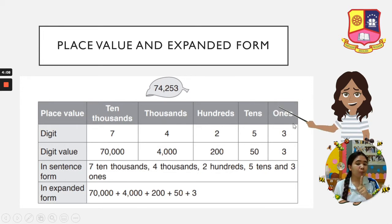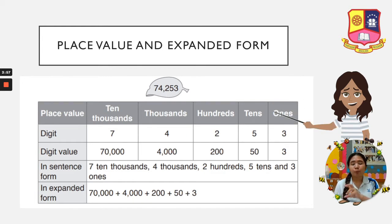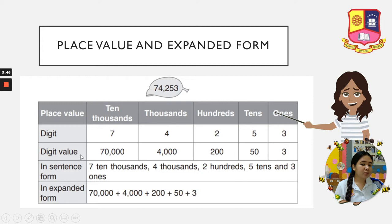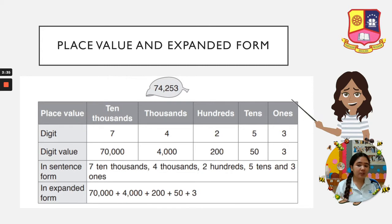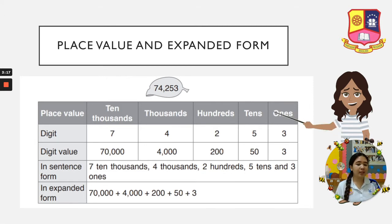The digit is the number — a single number. So the digits are 7, 4, 2, 5, and 3. The digit value is the presence of zeros. So the digit value of 7 — it is on the 10,000 place, so it has four zeros, making it 70,000. Then 4,000, 200, 50, and 3. In sentence form, you combine the digit and the place value: 7 ten-thousands, 4 thousands, 2 hundreds, 5 tens, and 3 ones. In expanded form, we combine the digit values: 70,000 + 4,000 + 200 + 50 + 3.